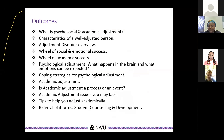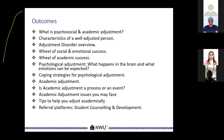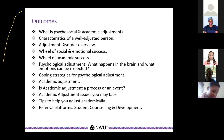We are going to be discussing psychosocial and academic adjustment, the characteristics of a well-adjusted person, and the adjustment disorder. We have two wheels: the wheel of social and emotional success and the wheel of academic success. We'll also discuss psychological adjustment, what happens in the brain, emotions to expect, strategies for adjustment, academic adjustment as a process or event, issues students may face, tips for academic adjustment, and our referral platforms.